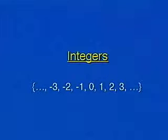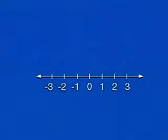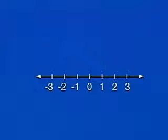The integers are the whole numbers — zero, one, two, three — plus negative one, negative two, negative three. We can visualize the set of integers on a number line, where minus three, minus two, minus one, zero, one, two, three, and so on are all indicated.